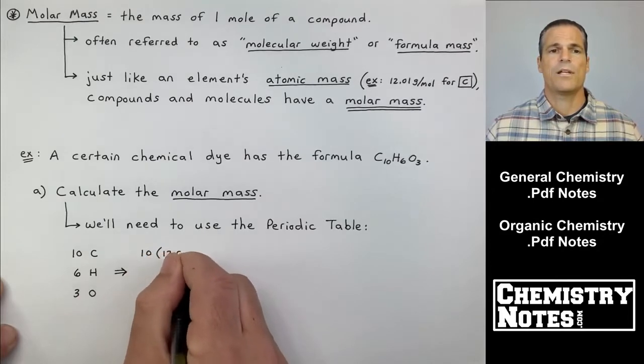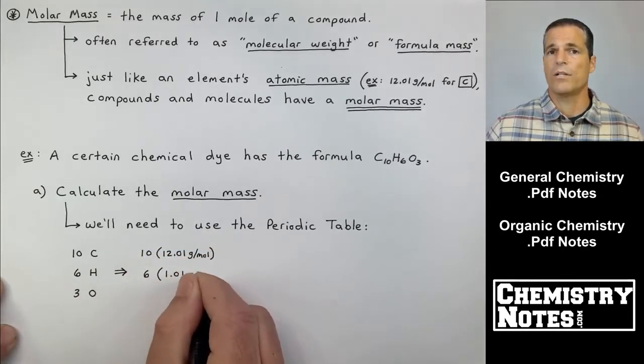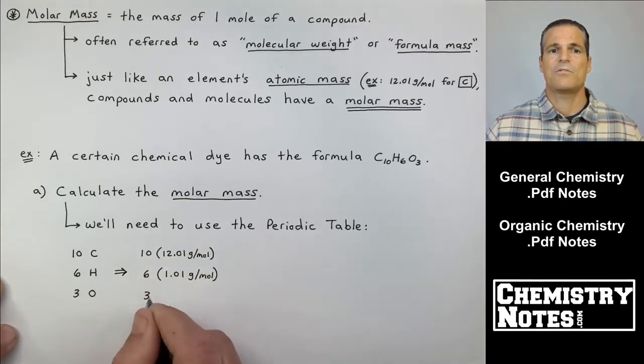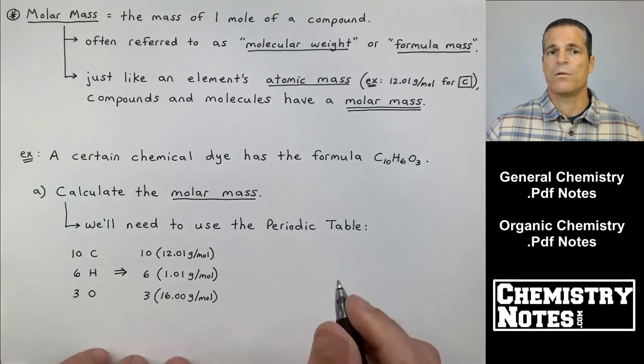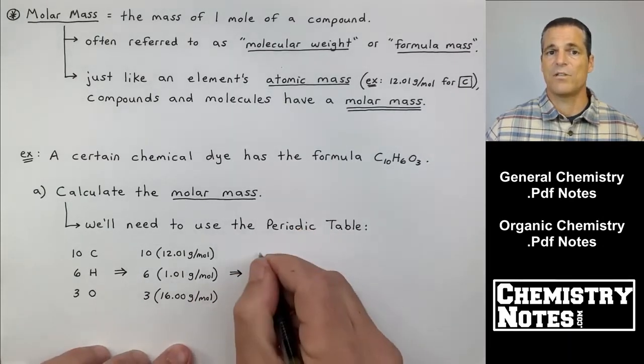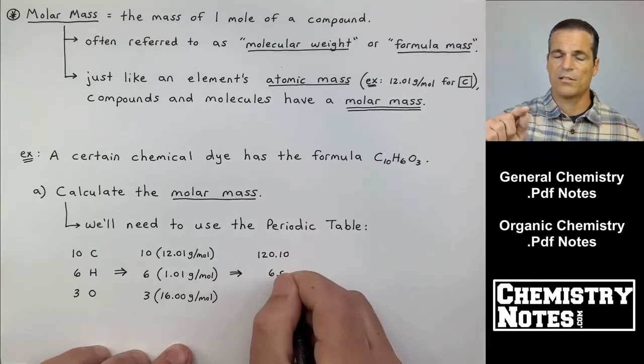So I made a little grid here: 10 carbons, 10 times 12.01 grams per mole; six hydrogens, six times 1.01 grams per mole. The stuff in parentheses, those are the individual atomic masses of carbon, hydrogen, and oxygen going down.